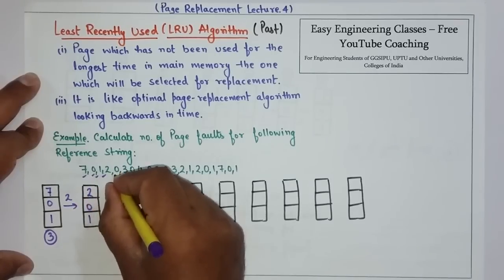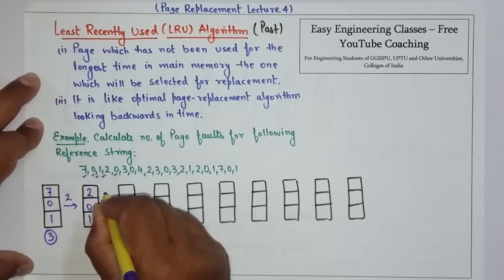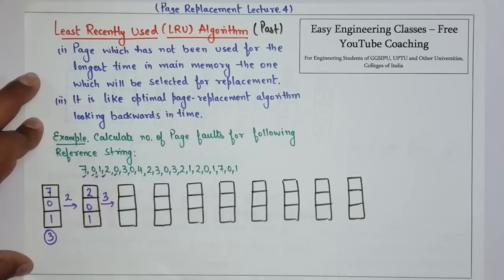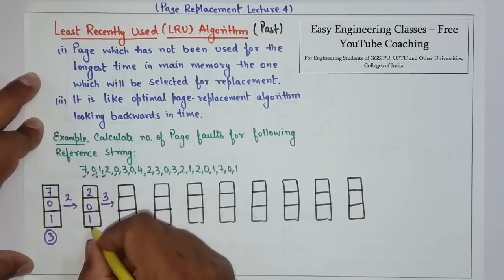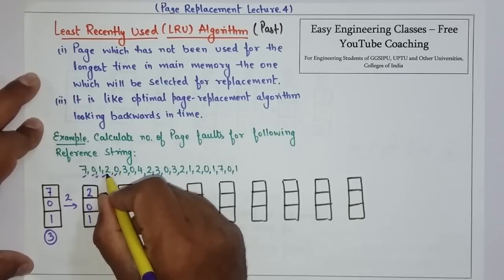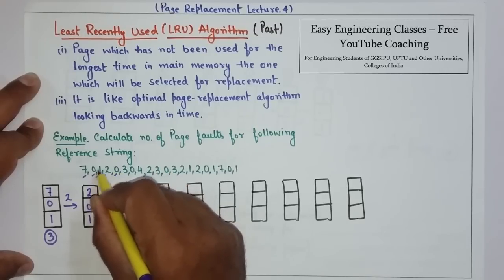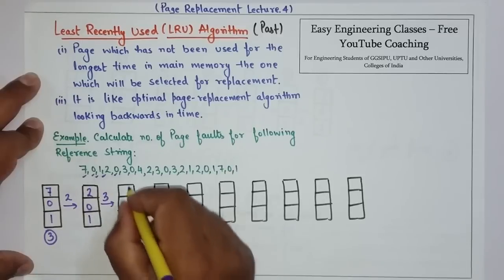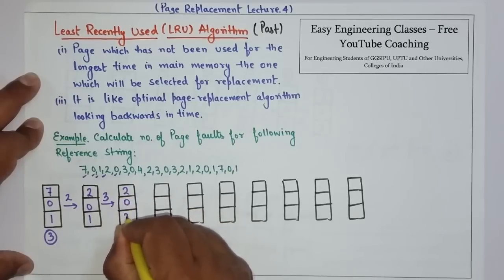Then, 0, 0 is already there. So, no page fault. Then, we have to replace it. Now, in this case, we have to see 3. In this case, we will see which one is the first one. 0 and 2 are used before. Then, we have to replace it. So, we will replace it. So, this will be 2, 0, 3.